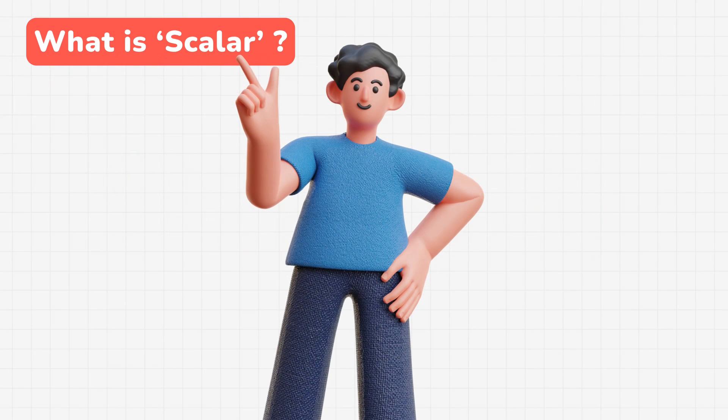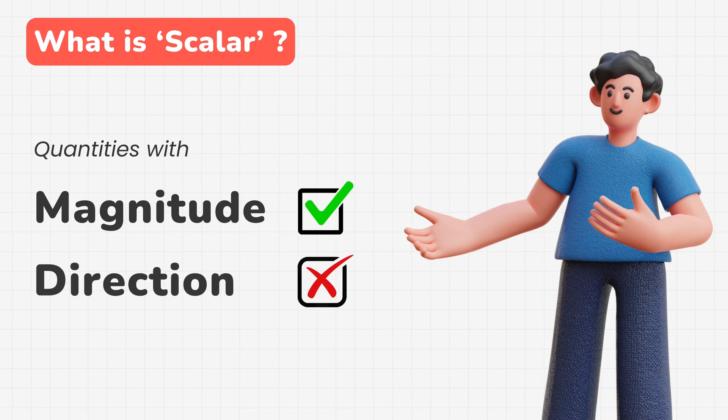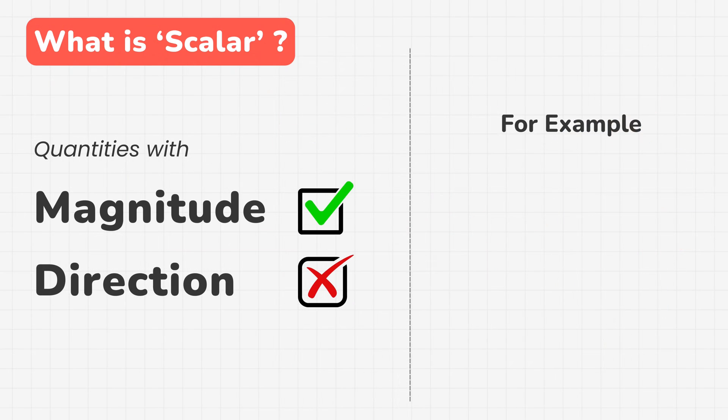There are some quantities in physics that only need magnitude to be understood. They don't require any direction. For example, mass.